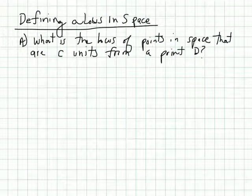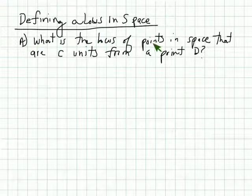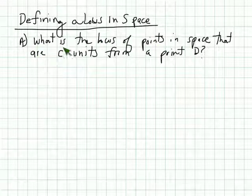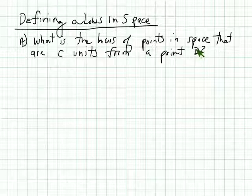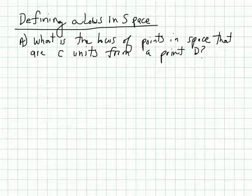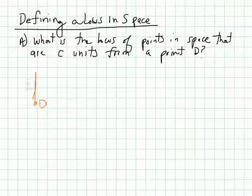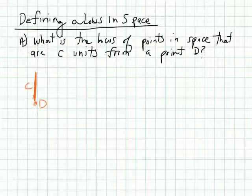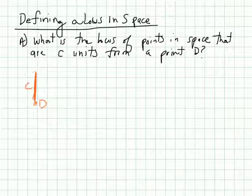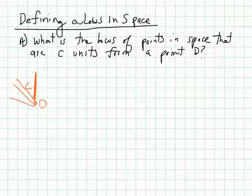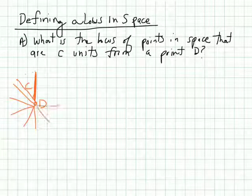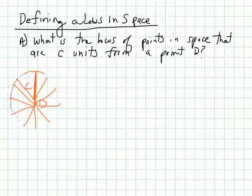Lastly, let's just define a locus in space. So what is a locus of points in space that are C units? So this is the distance from a point D. So D is going to be our center, right? Just to draw this first. D is our center, and C is the number or the distance that it is from D. So all of these points are going to be the same distance away from D, and you're going to create a circle.